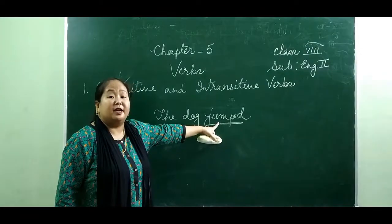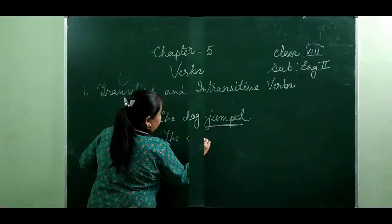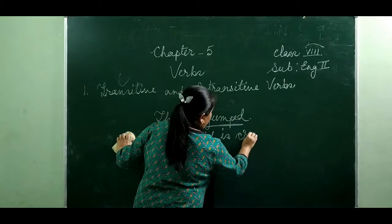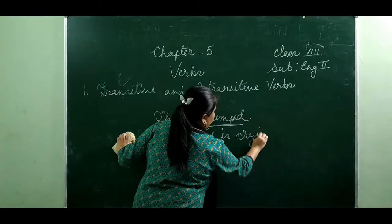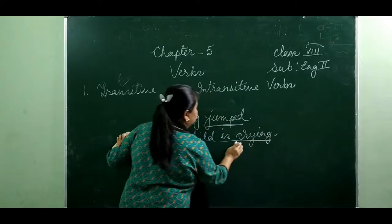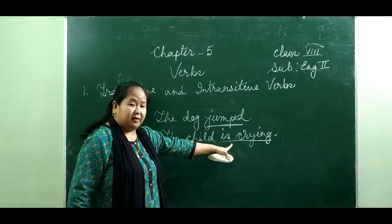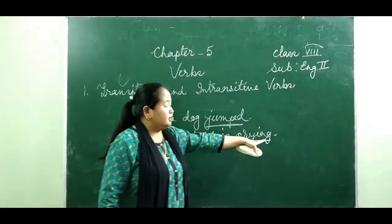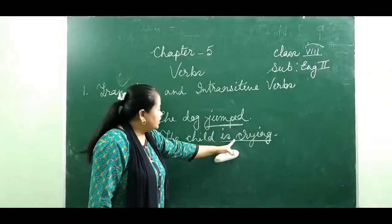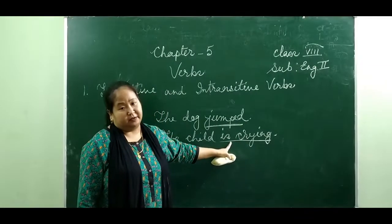The verb itself completes its meaning, so this verb is an intransitive verb. Another example: 'the child is crying.' The verb phrase 'is crying' completes its meaning — it doesn't take any object to complete its meaning. So the verb phrase 'is crying' is an intransitive verb.